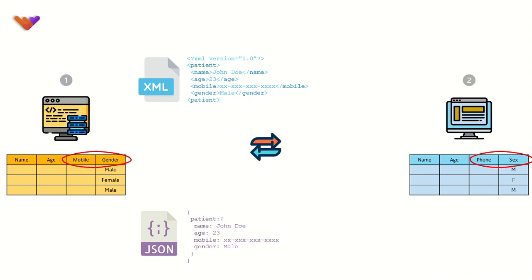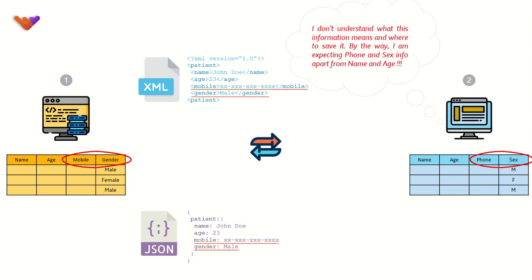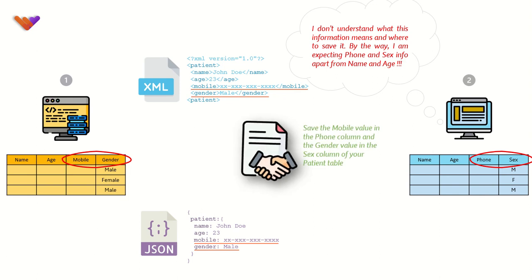As a result, even if we send the information over platform-neutral languages, the receiving system cannot interpret the meaning of it unless there is a pre-agreed contract that defines the mapping between each of the table columns. So this set of systems can truly be termed as interoperable only when they can communicate with minimal or without any such contracts, even after they scale at a later point of time.